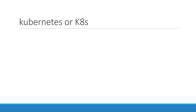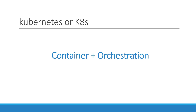To understand Kubernetes, we must first understand two things: containers and orchestration. Once we get familiarized with both of these terms, we would be in a position to understand what Kubernetes is capable of. We will start by looking at each of these next.